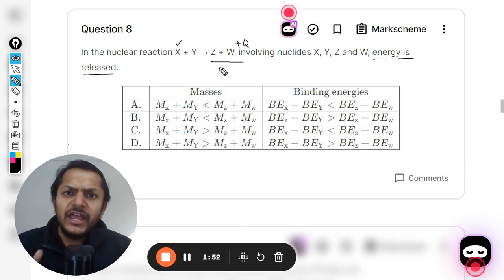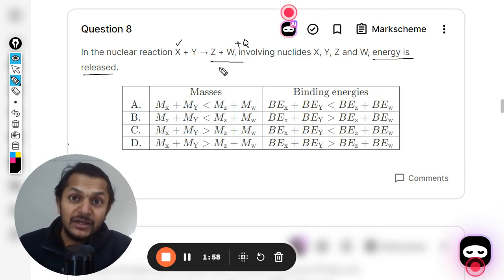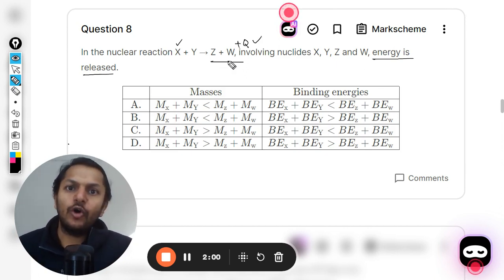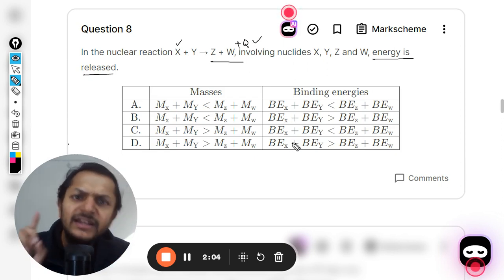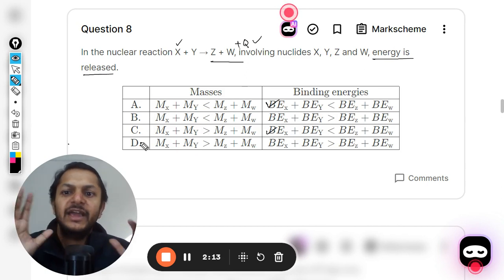So this energy which was released while Z and W were created—it should be more than the energy required by X and Y to break themselves, and that is why only overall net energy is released, isn't it? So we can clearly jump to one conclusion that the binding energy for Z and W will be more than that of X and Y.